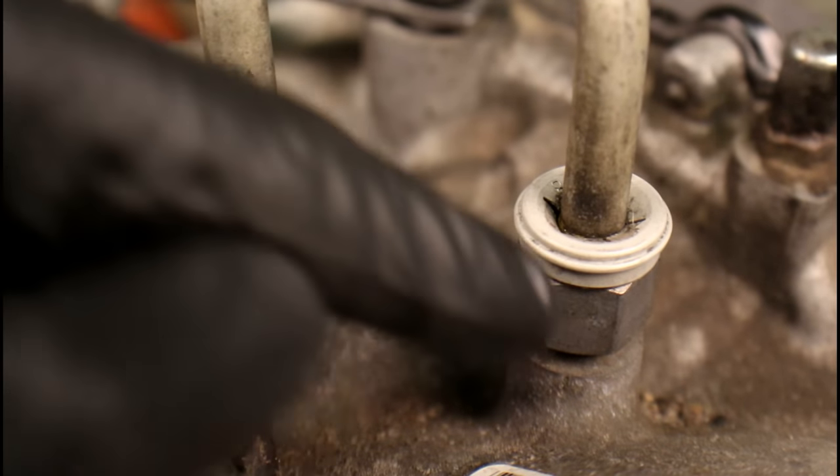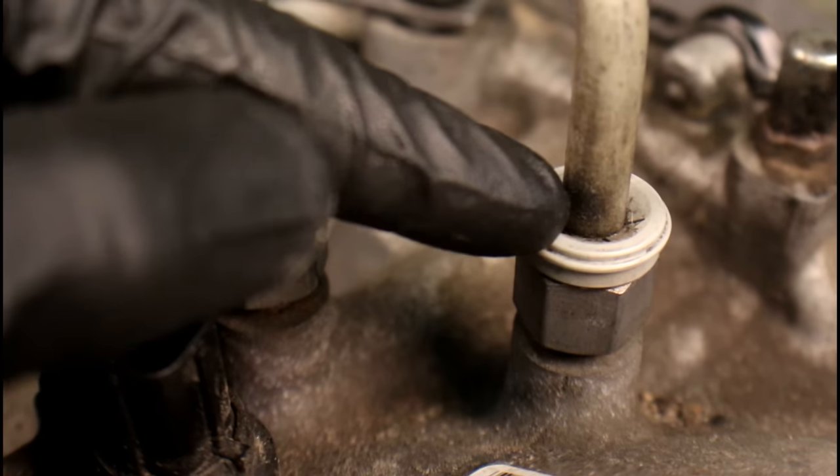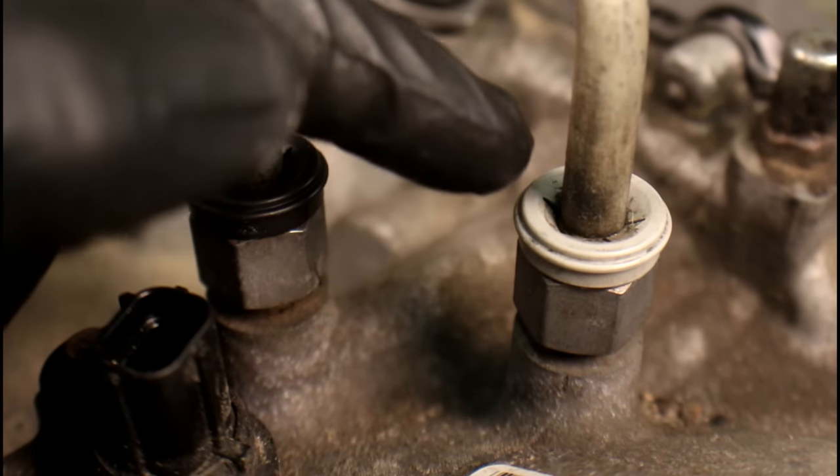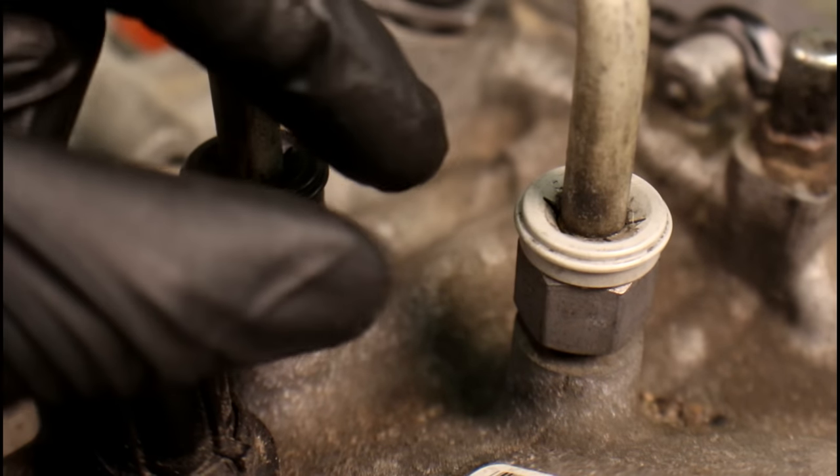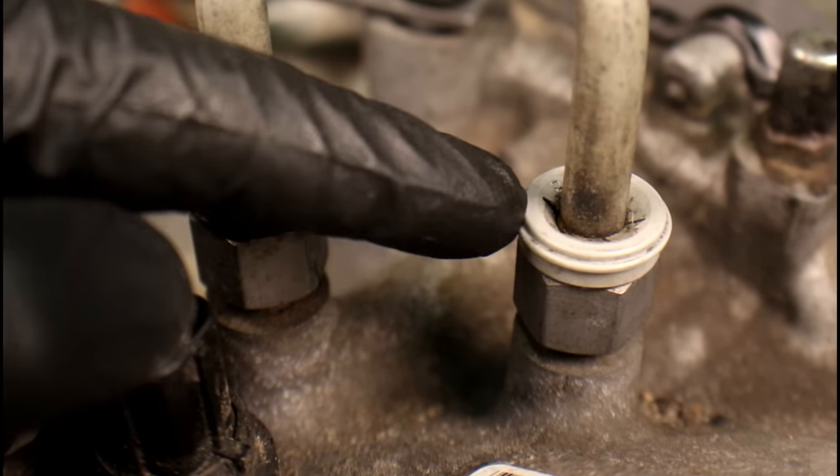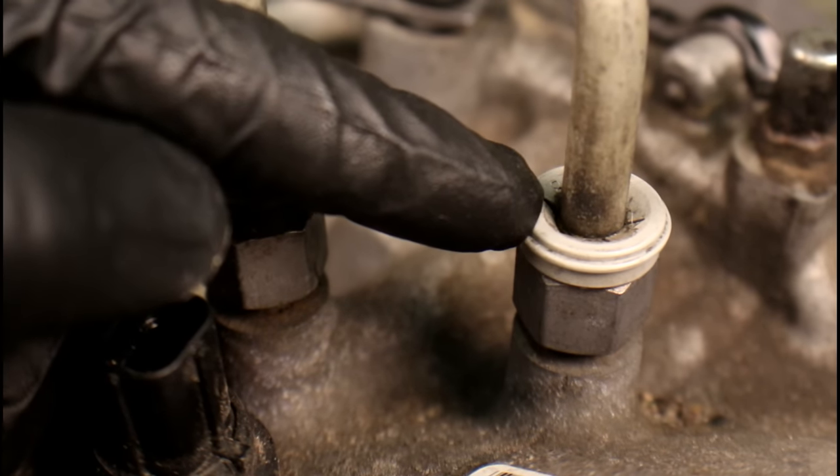Now the quick connects may or may not have these plastic caps on top. The caps are there to help keep the spring clip in its lock position. It keeps it compressed. Now if you don't have them, have no fears, it's not going to cause any major problems. Some vehicles were designed without them.